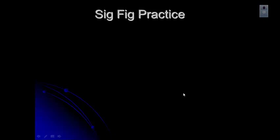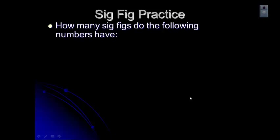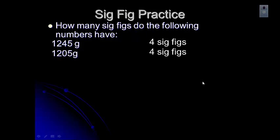Let's try another round of practice problems. Tell me how many sig figs each of the following numbers has. The first number has four — all of those are non-zero digits, so that should be straightforward. The next number also has four sig figs; that zero is in the sandwich between two non-zero digits, making it a sig fig. The following number has five — any zeros in the sandwich between two non-zero digits count as significant digits, giving five in that one.